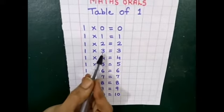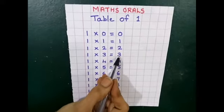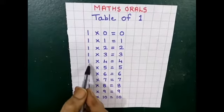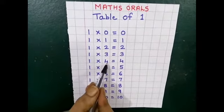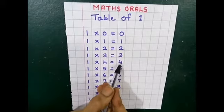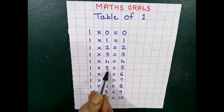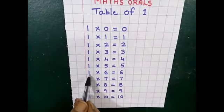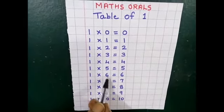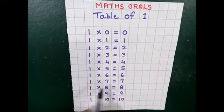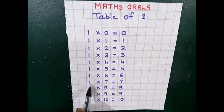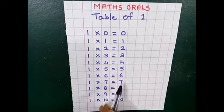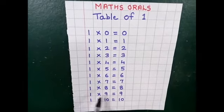1 3s are 3. 1 4s are 4. 1 5s are 5. 1 6s are 6. 1 7s are 7.